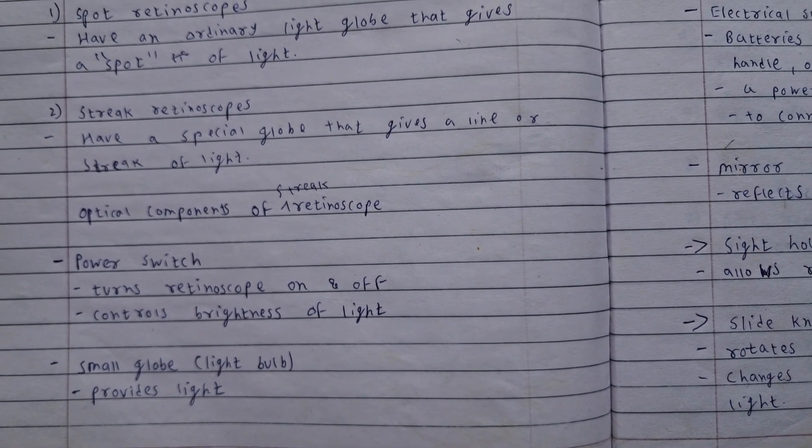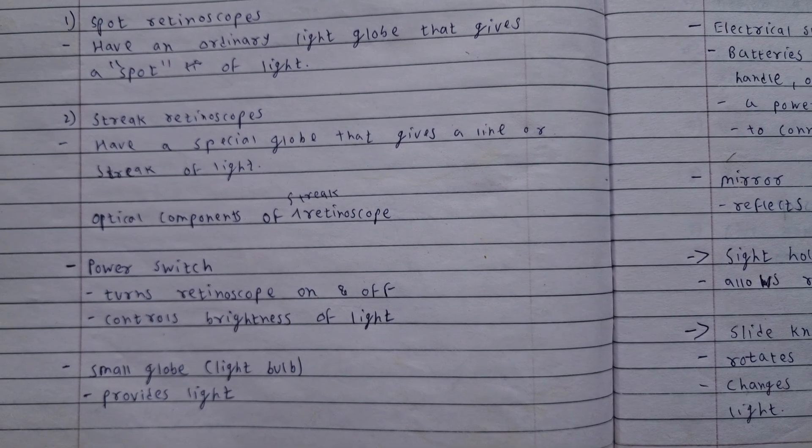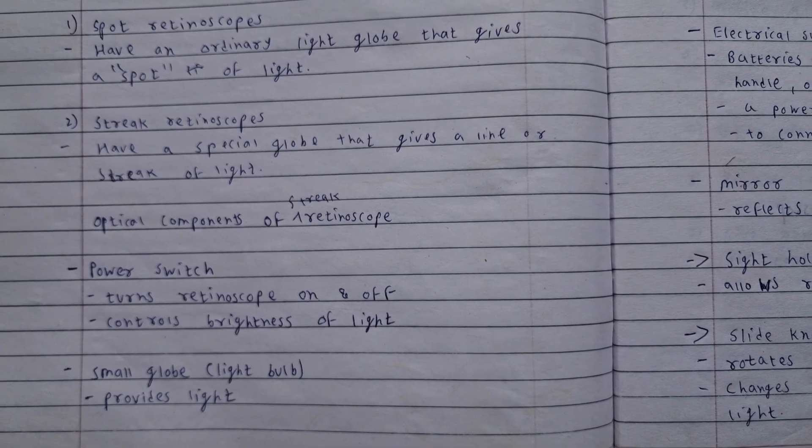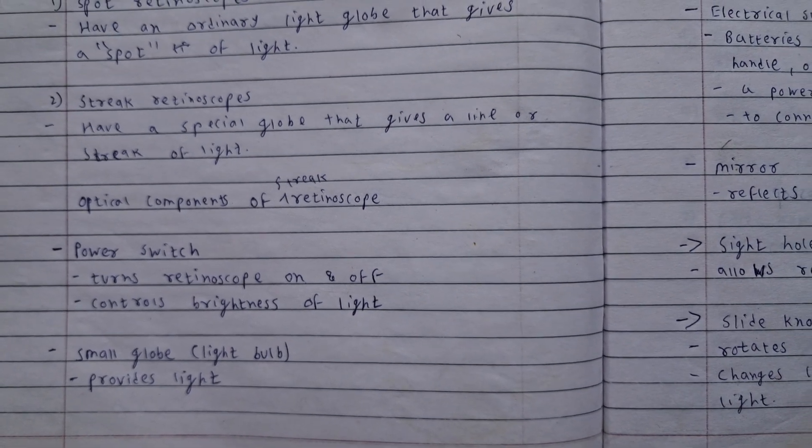Optical components of streak retinoscope: power switch turns retinoscope on and off, controls brightness of light. Small globe light bulb provides light.